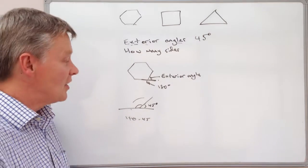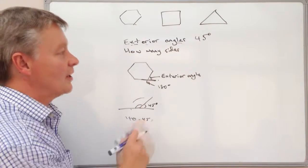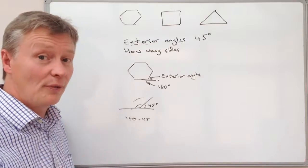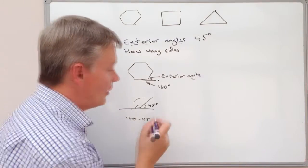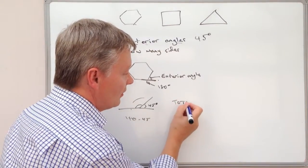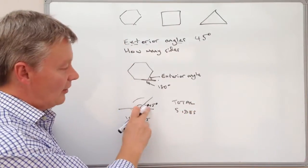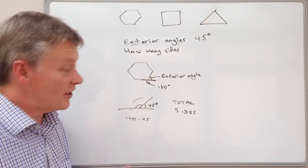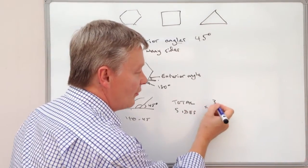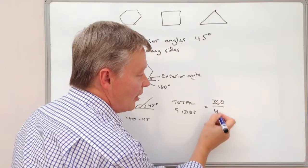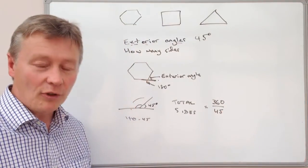If we know the exterior angle is 45, then the total number of sides is going to be how many lots of 45 are there in 360, or in other words 360 divided by 45. The same will hold true for any regular polygon providing you know what the exterior angle is.